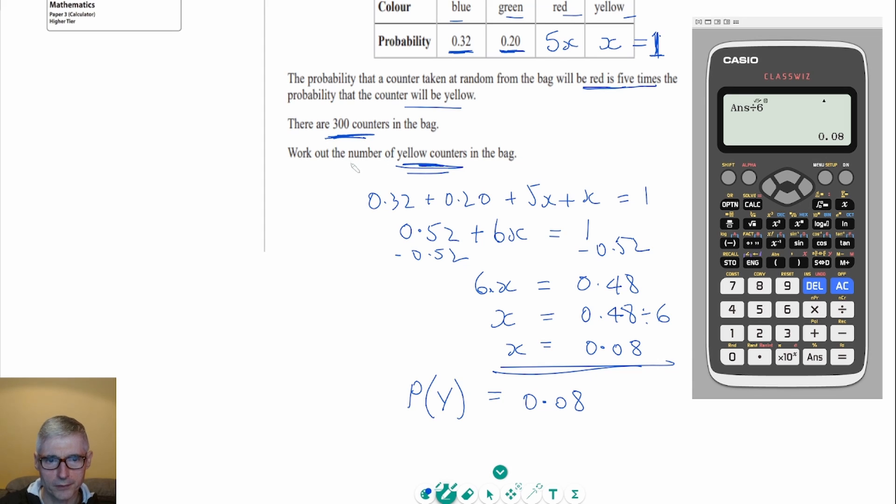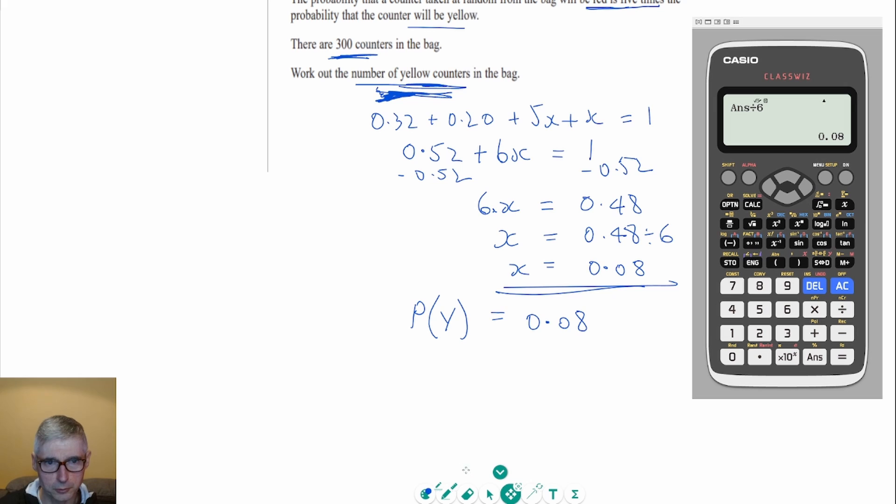But we want to work out the number of yellow counters in a bag. And if we want to do that, all we need to do is take that probability that we've just worked out and times it by 300. Because as a proportion, 0.08 of the total will be yellow, if that's its probability. So we can say the number of yellow is going to equal 300 times by 0.08. And again, I'm just going to do that definitely on the calculator. So times by 300, and that tells me there are 24 yellow counters in the bag.